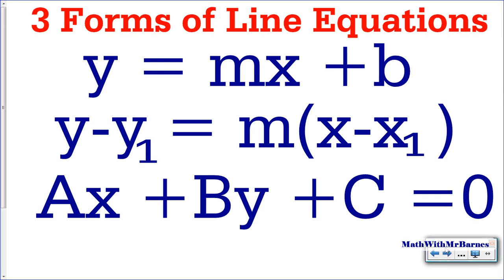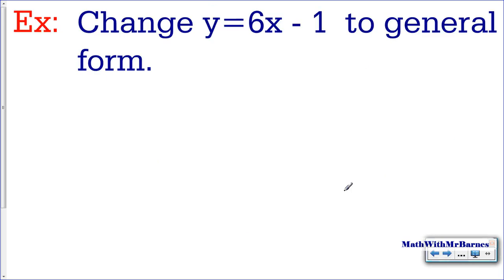Let's look at y equals mx plus b and let's change one of these. So y equals 6x minus 1. What you want to do is get everything to one side. So when you have a y here, the only thing I do is subtract y from both sides.